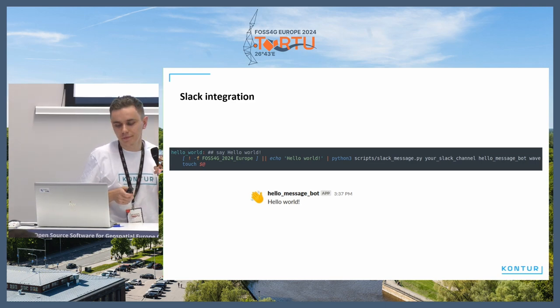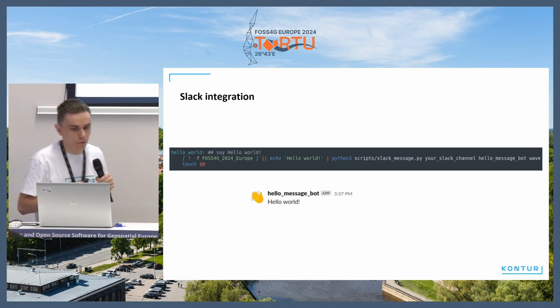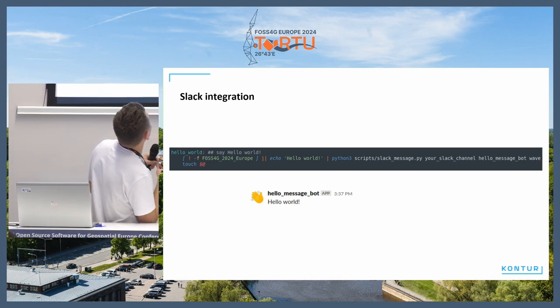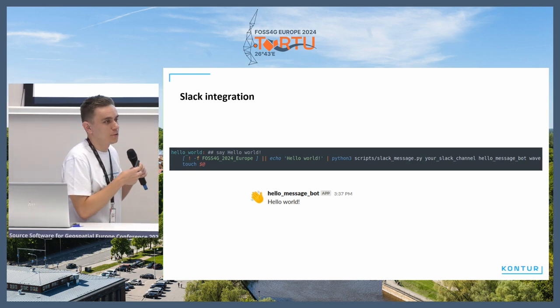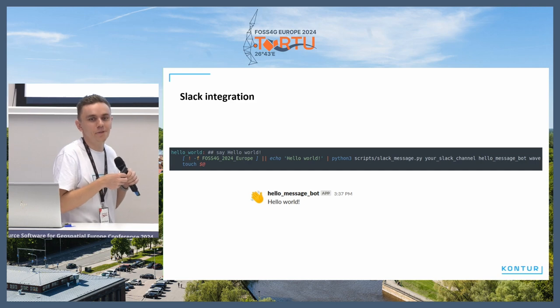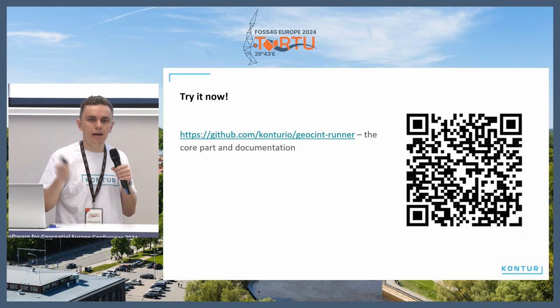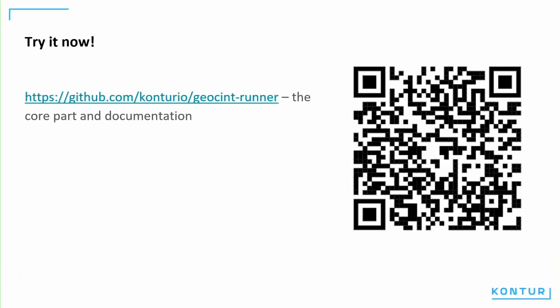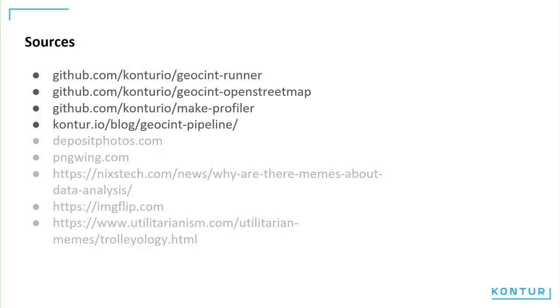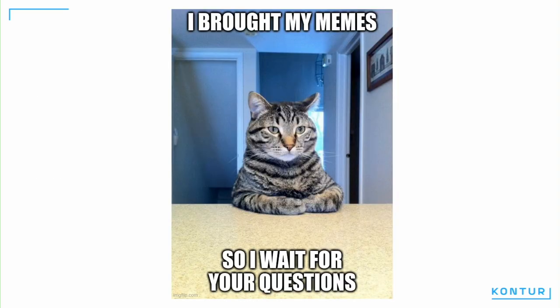Let's say hello world. Thank you. To do that you just check if FOSS4G 2024 Europe is true — and yes, it's true — so hello world. This is the link and QR code directly to GeoSynth Runner. It's the core part where you can find the guidelines on how to install it. You can also make a pull request if you want. These are the sources. I brought my memes, so I want your questions.